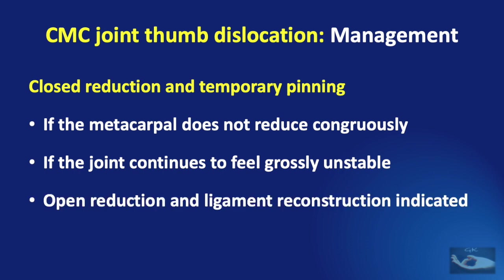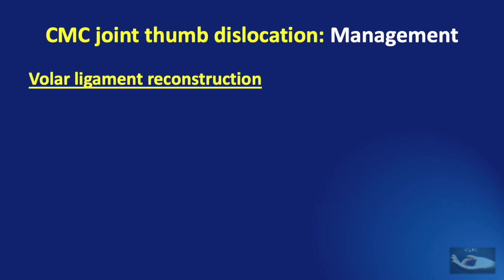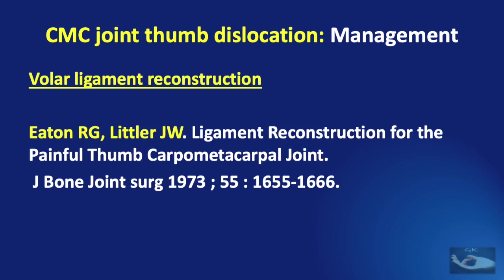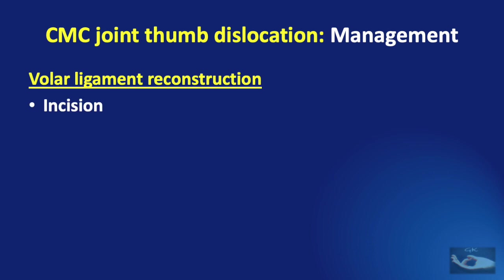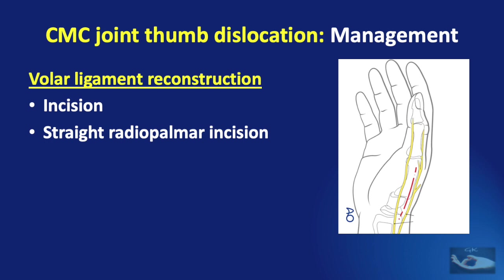Open reduction is indicated and ligament reconstruction must be done. The technique of volar ligament reconstruction was described by Eaton and Littler in 1973. The incision can be a straight radiopalmar incision, which prevents injury to the longitudinally lying branches of the superficial radial nerve, though exposure by this incision is limited.